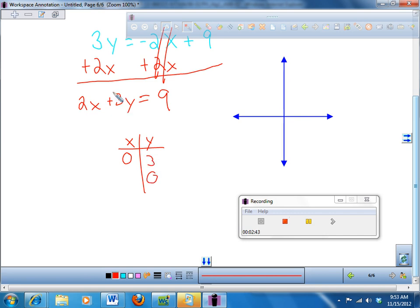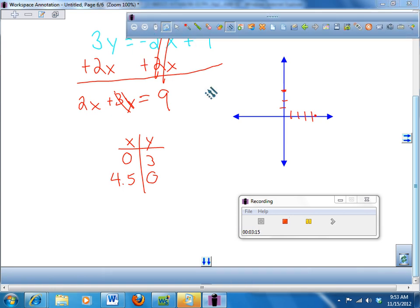But when Y is 0, so say I cover this up. 2 times what number gives me 9? 4.5. So you can either do that in your head, say 2 times what number gives me 9, or I can divide 9 by 2, right? 9 divided by 2, and I get 4.5. So this graph goes through 0, 3, and 1, 2, 3, 4, 0.5, about 0.